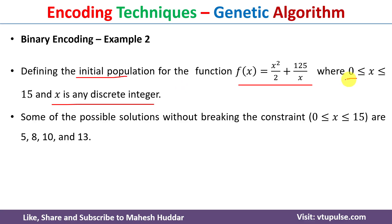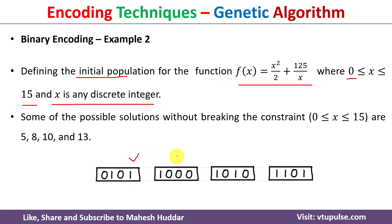To represent 0 we use four zeros; to represent 15 we use four ones. In between we have different possibilities. The first chromosome '0101' represents the potential solution 5, the second represents 8, the third represents 10, and the fourth represents 13.